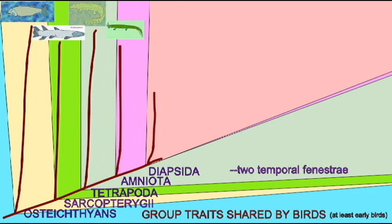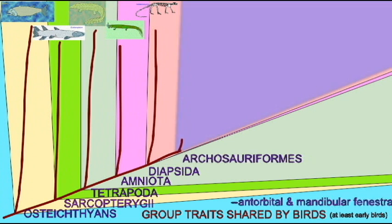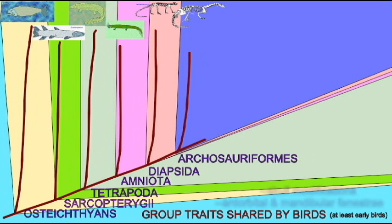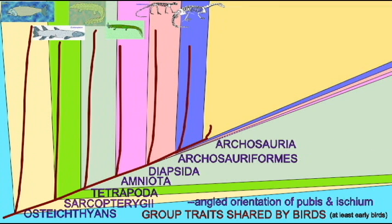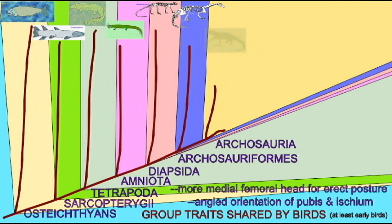As we consider birds, birds have a number of features which are not unique to birds — they identify birds as members of these larger groups. The bones of the wing and the muscles of the wing did not appear suddenly with the formation of wings,